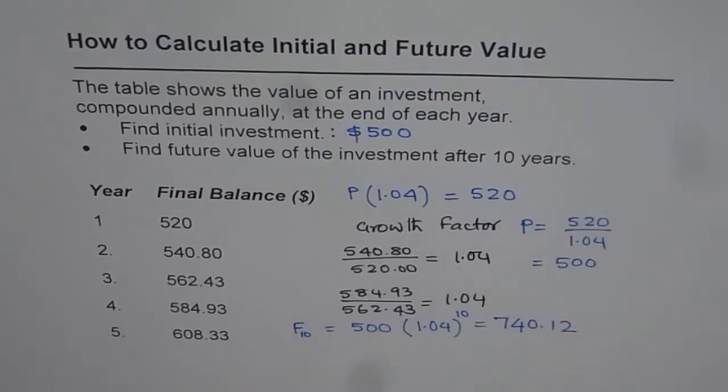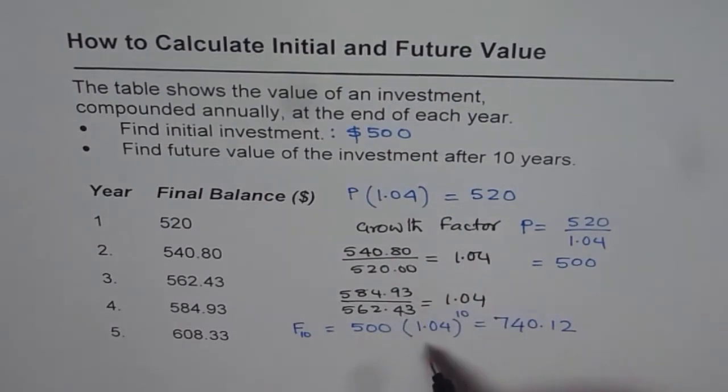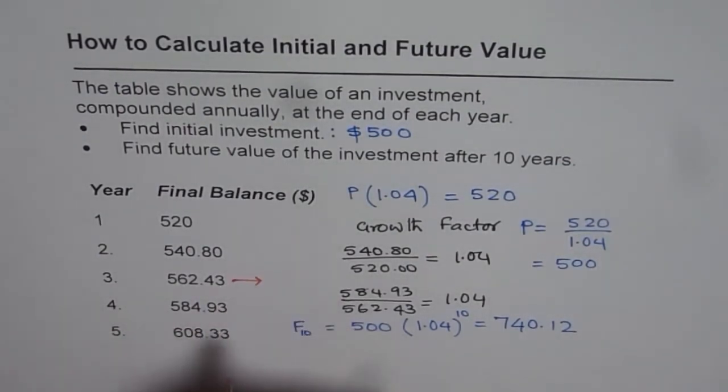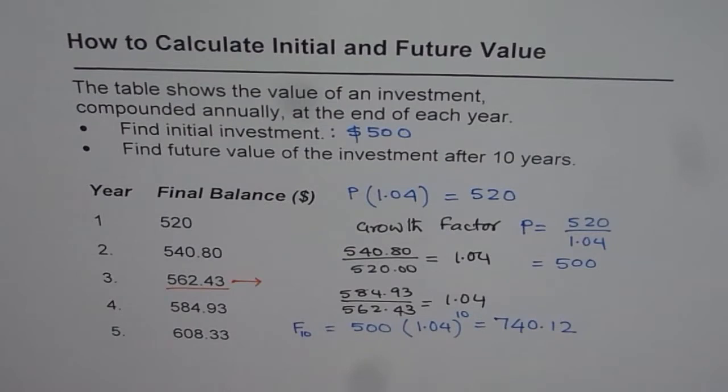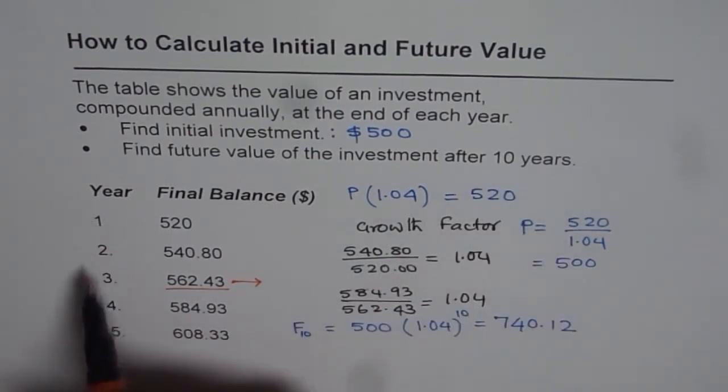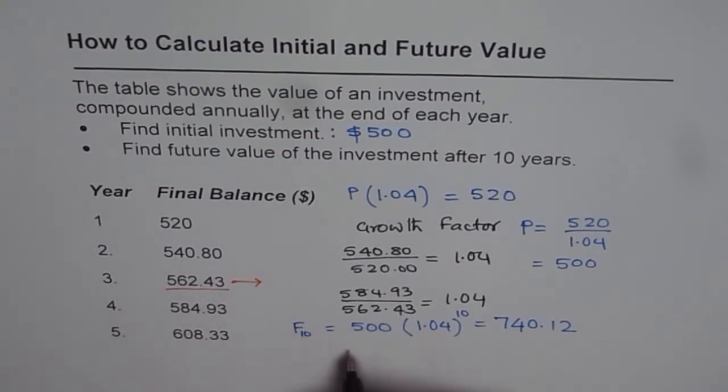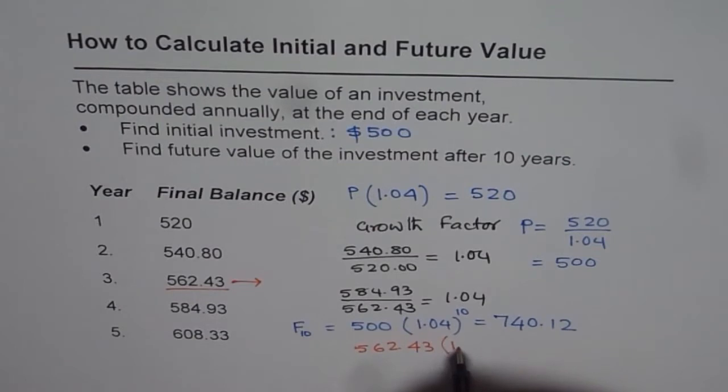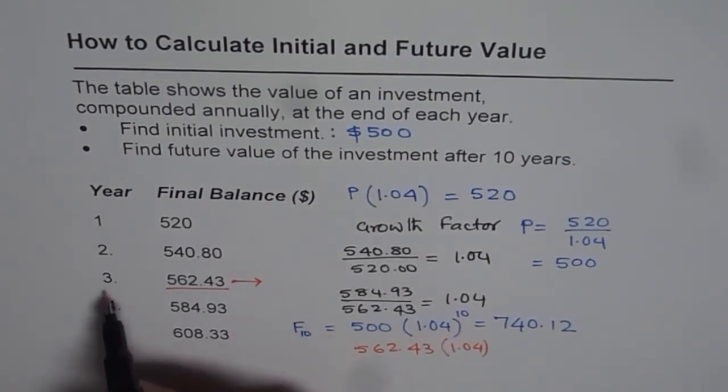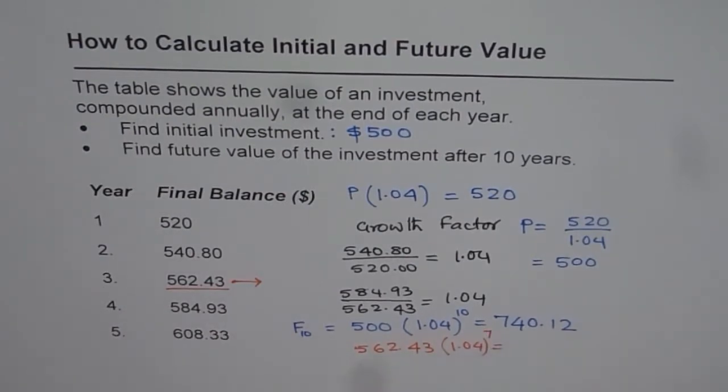Now we got this answer. But here there is one thing. In this question a part of the question was to find initial investment and therefore first we found the initial investment and then the final value. But if we would have to find the final value without using initial investment we could have done it. Let us say we start from this point third year. If we know that at the end of 3 years the investment is 562.43, what is the investment after 10 years? We can use 562.43 this value at the end of 3 years and say it should be multiplied by how many times. 10 minus 3 is 7. So it should be multiplied by 7 times.